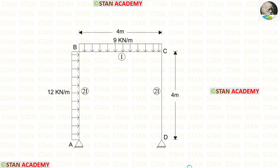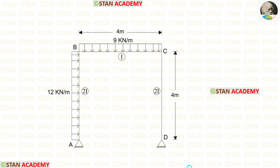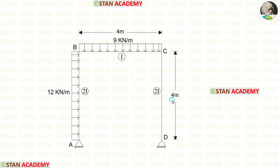In this frame there are two columns, column AB and column CD. Also there is a beam BC. In column AB there is a uniformly distributed load of 12 kN per meter acting for the full span. In beam BC there is a uniformly distributed load of 9 kN per meter, also acting for the full span. The height of both columns is 4 meters and the length of the beam is 4 meters. The moment of inertia for column AB is 2I, for column CD is 2I, and for beam BC is I.